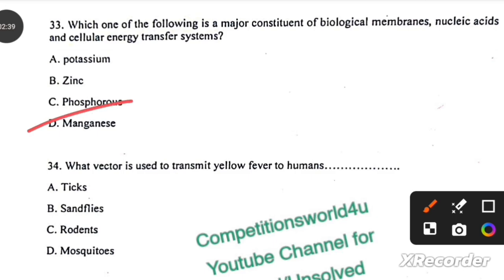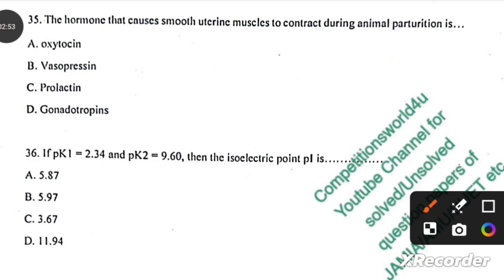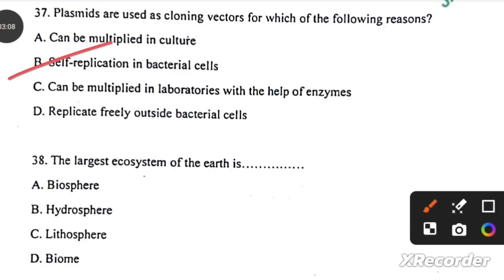What vector is used to transmit yellow fever to humans? Mosquitoes. The hormone that causes uterine muscles to contract during animal parturition is oxytocin. Then the isoelectric pA is 5.97, option B. Plasmids are used as cloning vectors for which of the following reasons? Self-replication in bacterial cells.